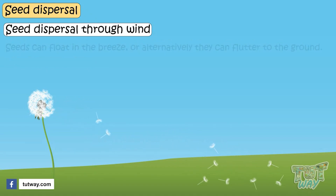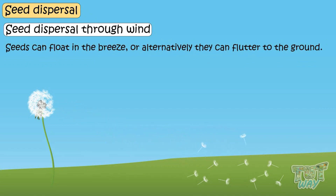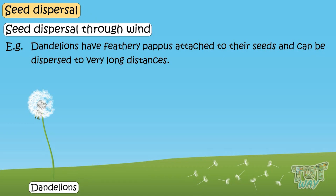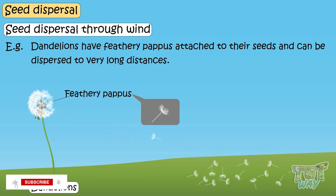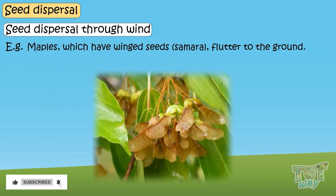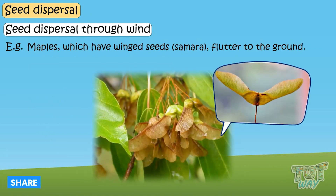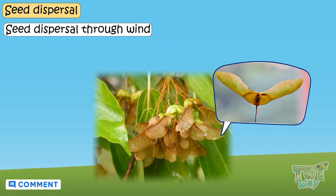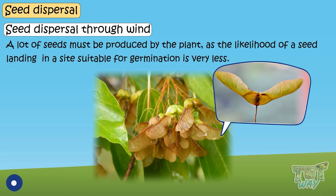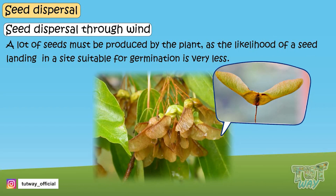Seeds can float on the breeze, or alternatively, they can flutter to the ground. The classic examples of these dispersal mechanisms include dandelions, which have feathery pappus attached to their seeds so they can disperse to very long distances. Maples have winged seeds that flutter to the ground. An important constraint in wind dispersal is that a lot of seeds must be produced by the plant, as the likelihood of a seed landing in a site suitable for germination is very low.